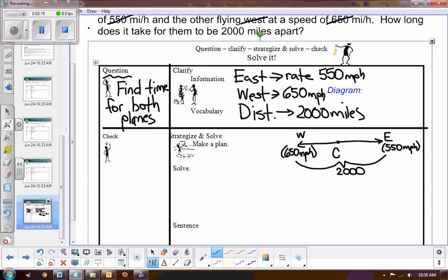And then we know the total distance will be 2,000. That's the key. We know that the distance for the east plane plus the distance flown by the westbound plane will equal 2,000. So once you've done that, you've comprehended the problem.